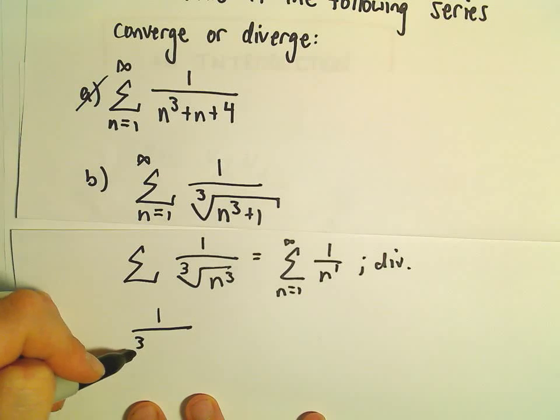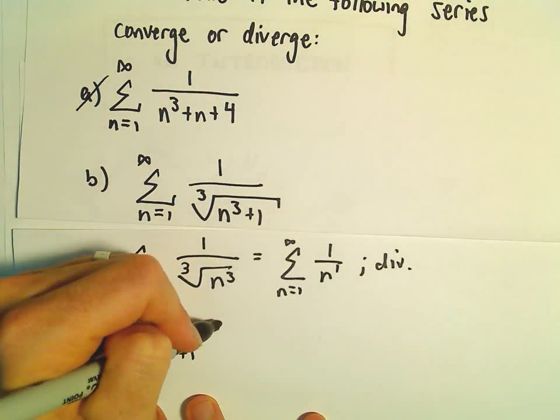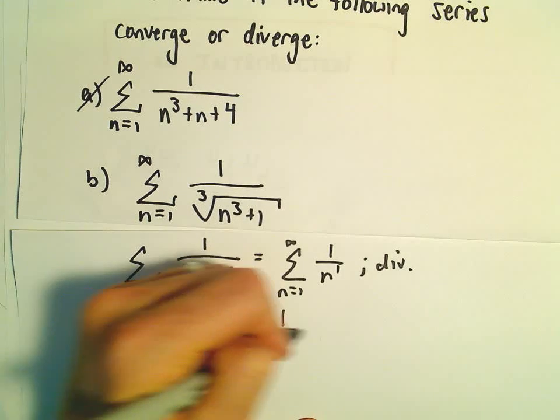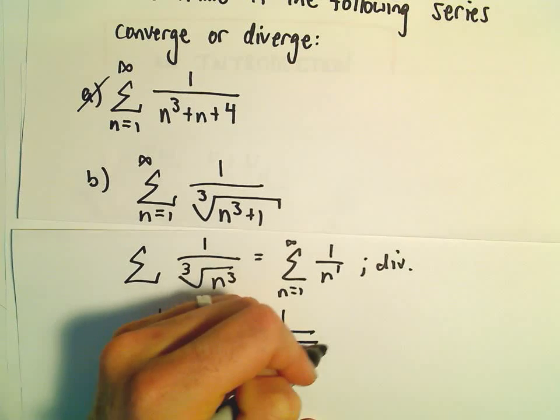So 1 over the cube root of n cubed plus 1, I claim that's certainly going to be greater than or equal to 1 over the cube root of n cubed plus n cubed.